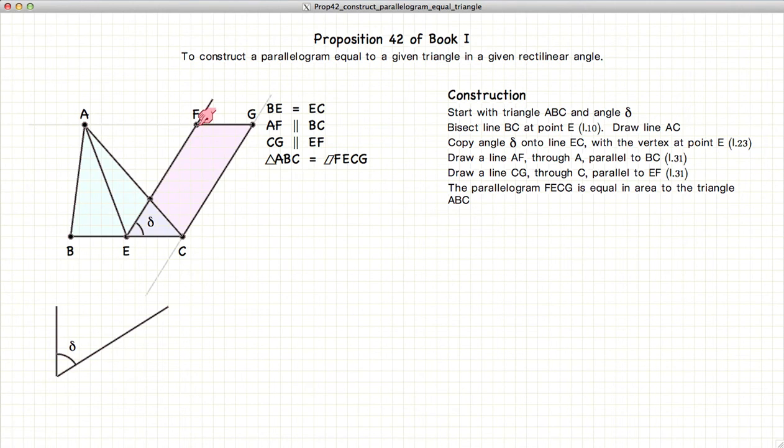And our parallelogram FECG contains the angle delta and is equal in area to the original triangle ABC. So how do we go about demonstrating that this is in fact true?